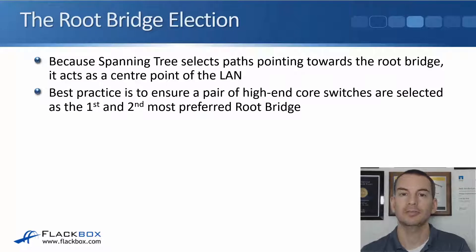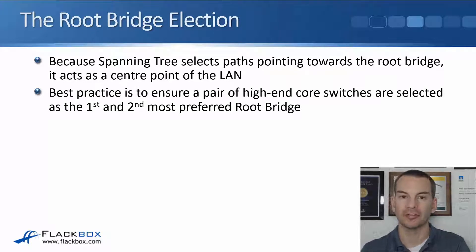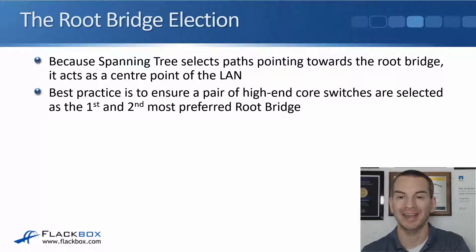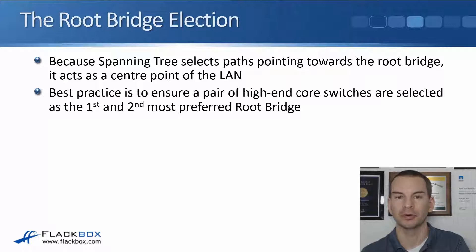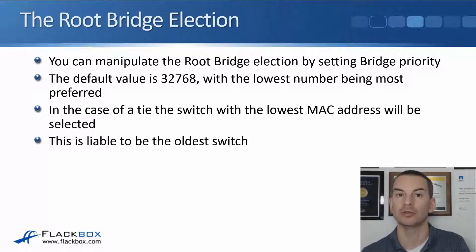In this lecture, you'll learn about manipulating the spanning tree root bridge election. Because spanning tree selects paths pointing towards and away from the root bridge for forwarding traffic along, the root bridge acts as a centre point of the LAN. Best practice is to ensure that a pair of high-end core switches are selected as the first and second most preferred root bridge. You can manipulate the root bridge election by setting bridge priority on your switches.